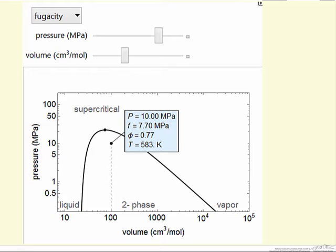The fugacity coefficient, which is just the ratio of the fugacity to the pressure, is also calculated. The fugacity coefficient gives us an idea of how much the gas or fluid deviates from an ideal gas. If the fugacity coefficient is one, it's an ideal gas. The temperature is also read off of this diagram for water.